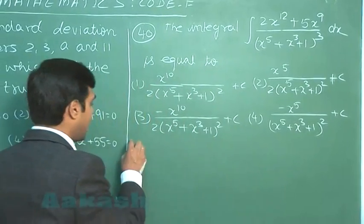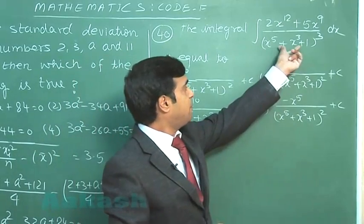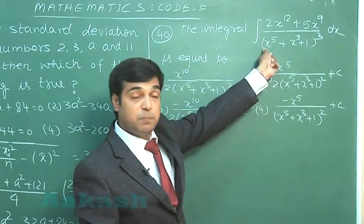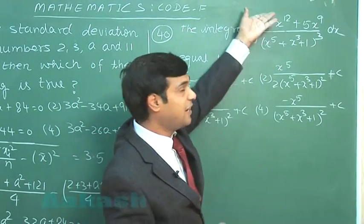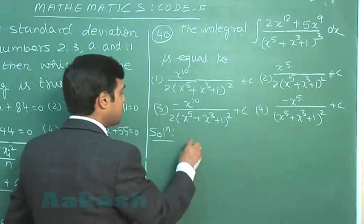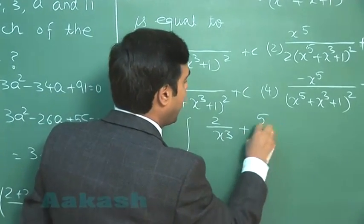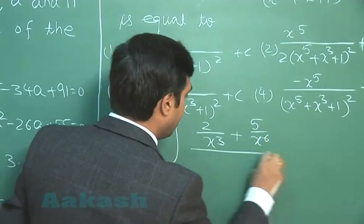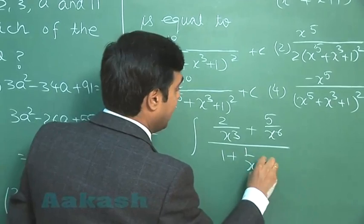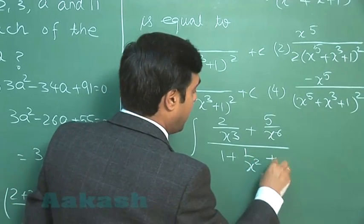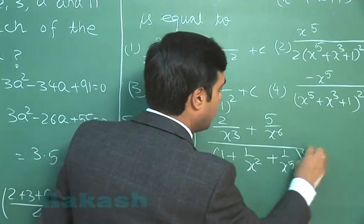So let us start it. We can simply plan this question by taking x^5 out of this bracket which becomes x^15 and taking that x^15 into the numerator part. This gives me 2 upon x^3 plus 5 upon x^6 divided by 1 plus 1 by x^2 plus 1 by x^5 whole cube dx.